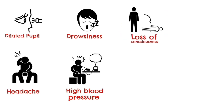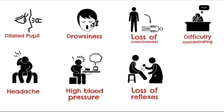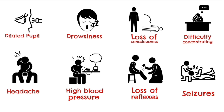As the brain herniation worsens, you can get loss of consciousness and coma due to damage to the reticular activating system located within the brain stem. On neurological examination, you may find loss of reflexes, and the patient may report a history of difficulty concentrating. Finally, many patients with brain herniations go on to have seizures, along with displaying decorticate and decerebrate posturing.